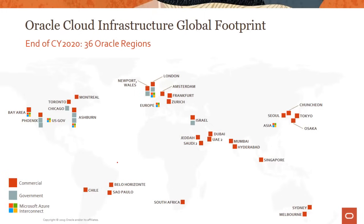As explained on the previous slide, by the end of next year, calendar year 2020, we will end up with 36 Oracle regions. These regions are listed here along with some of the government regions. We also have an interconnect with Azure — today in the US in the Ashburn region and in the London region. Over the next 13 months or so, we are going to expand that interconnect in multiple places in the US and also in Asia and Europe, to give customers an extra option to connect to Azure regions if they are running applications across Azure and Oracle Cloud Infrastructure in a truly multi-cloud fashion.